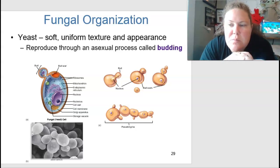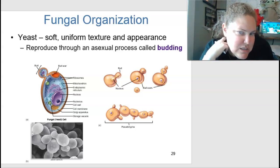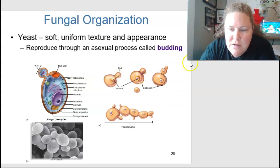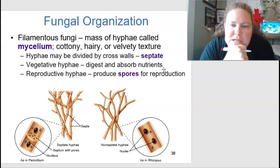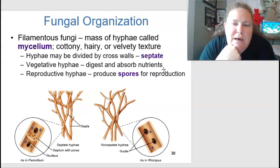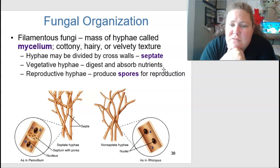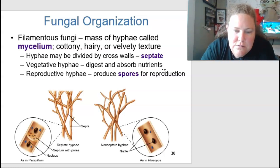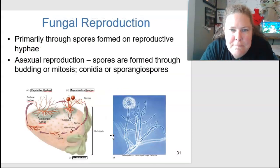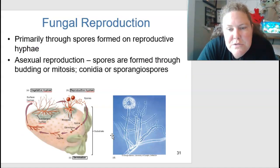Yeast have a soft, uniform texture and reproduce through asexual budding — the cell produces a small bud that develops and pinches off as a new cell. Filamentous fungi are masses of hyphae called mycelium, which are cottony, hairy, or velvety in texture. Hyphae may be divided by cross-walls called septa. Vegetative hyphae digest and absorb nutrients, while reproductive hyphae produce spores for reproduction.